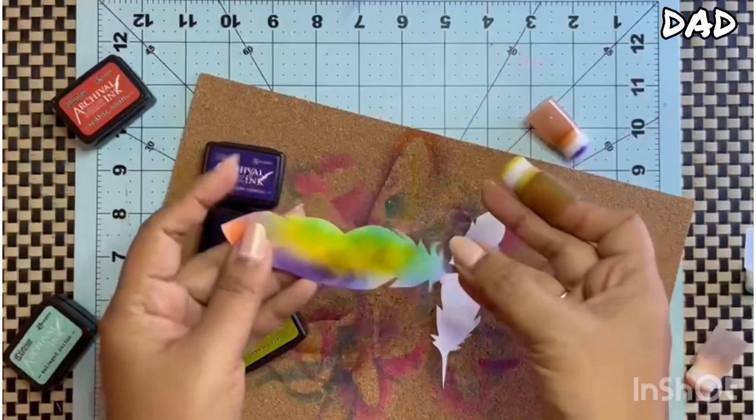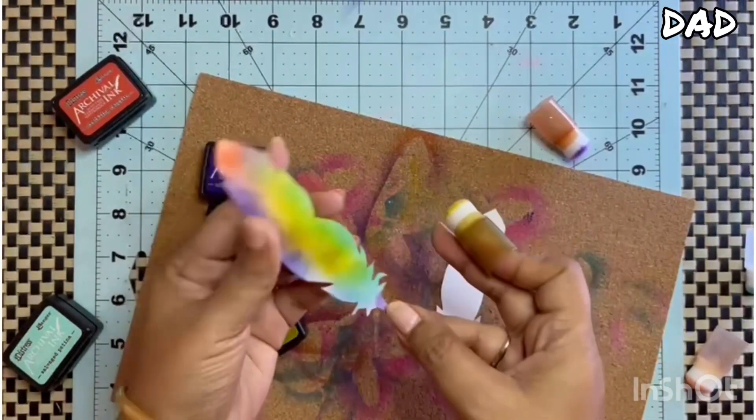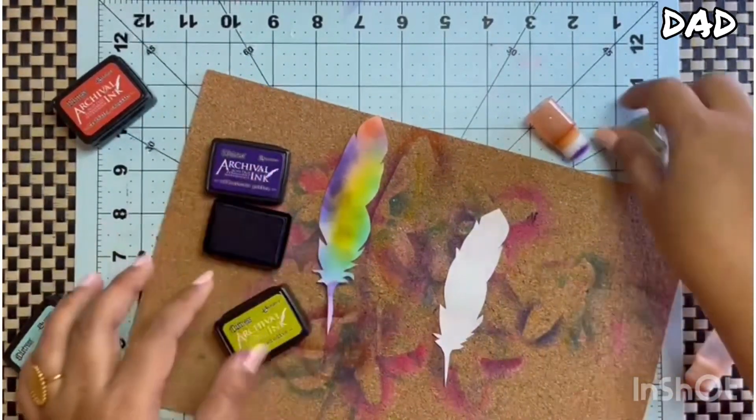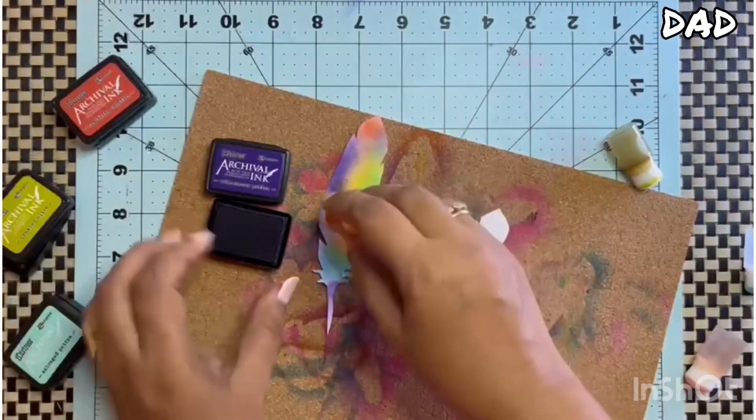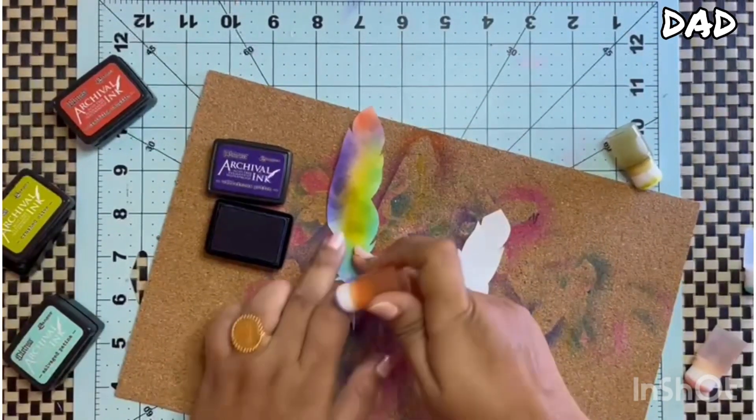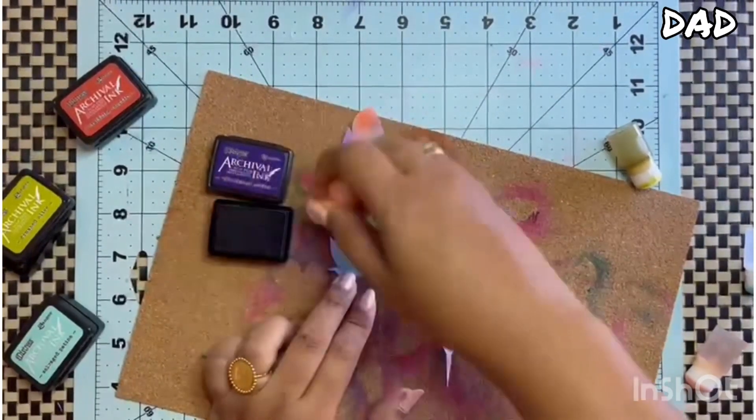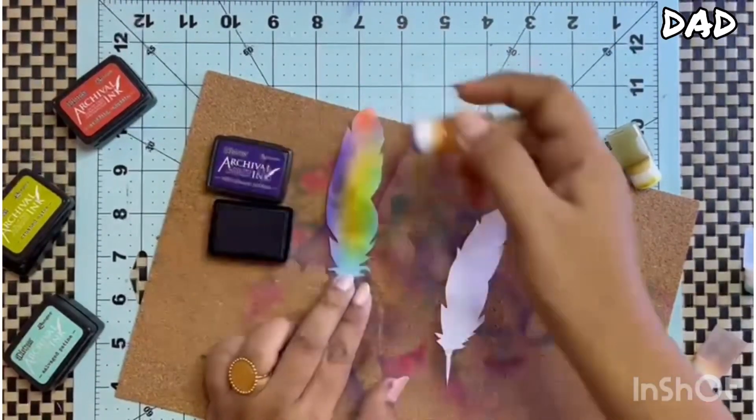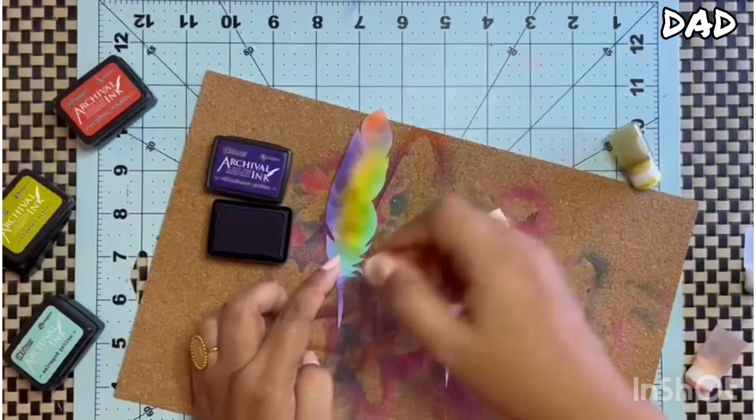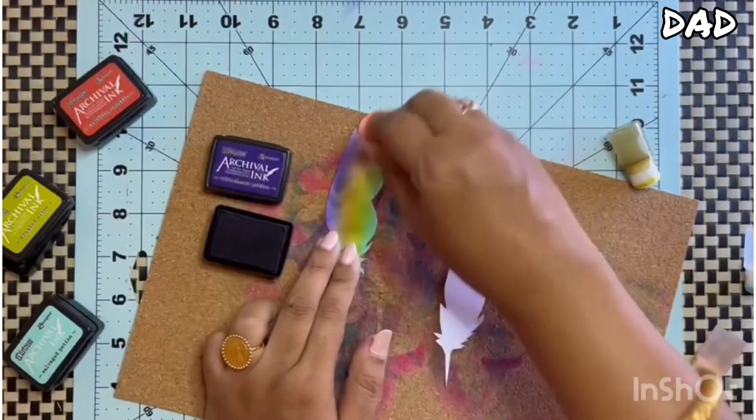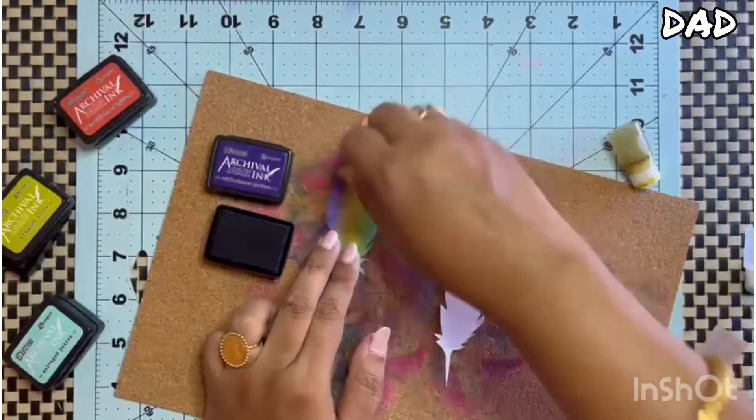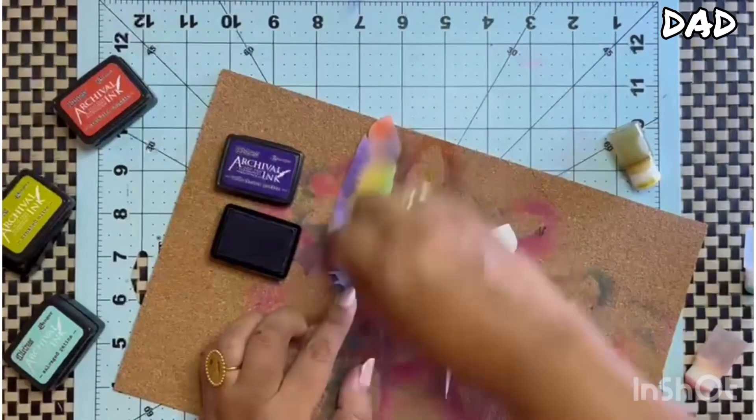So my one feather is ready, looking like this. A little bit of coloring I need to do to fill up the gap here. I can see a little bit of white. Now I just need to blend it well.